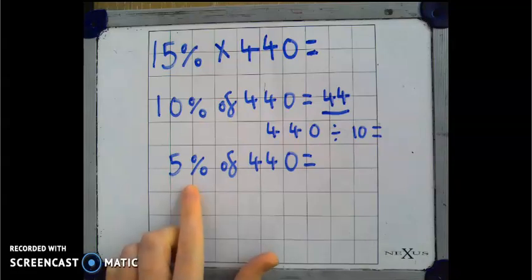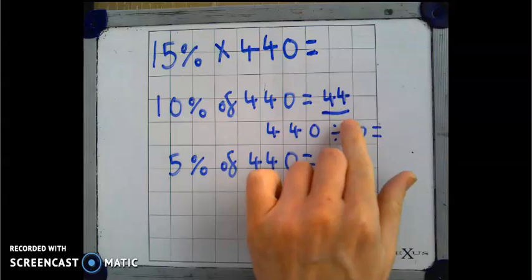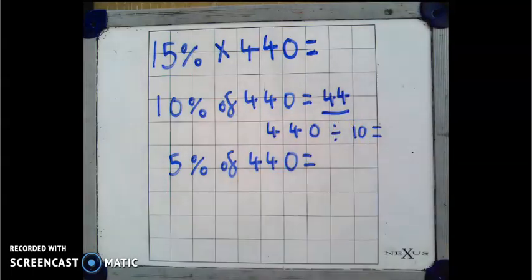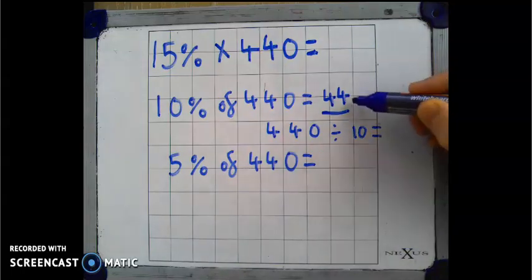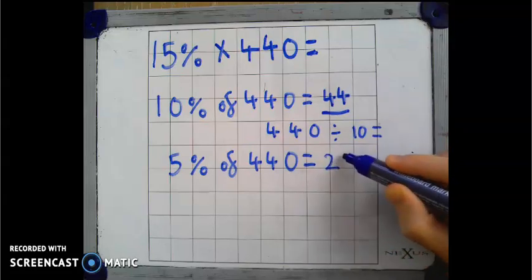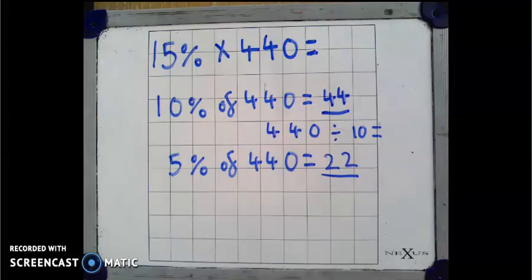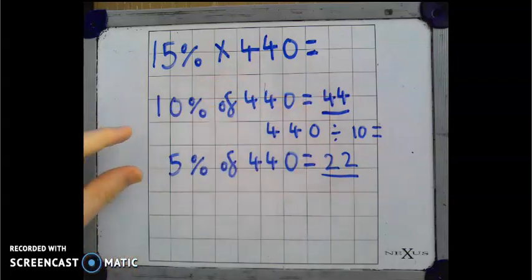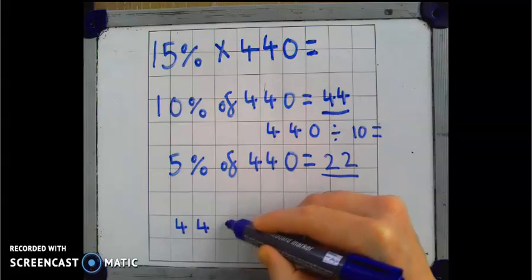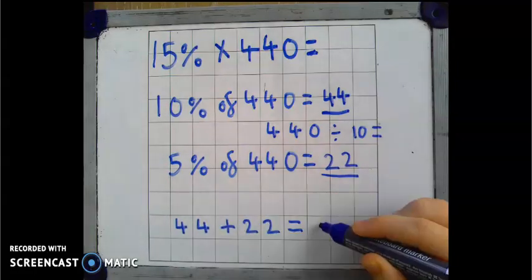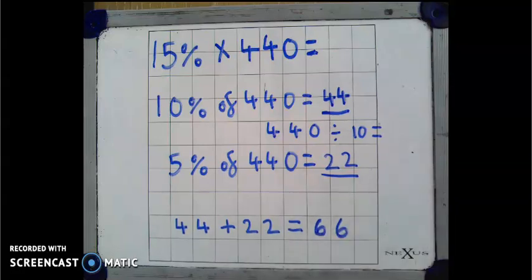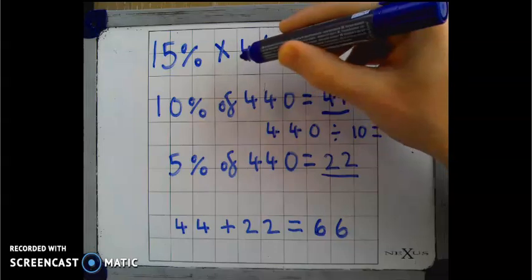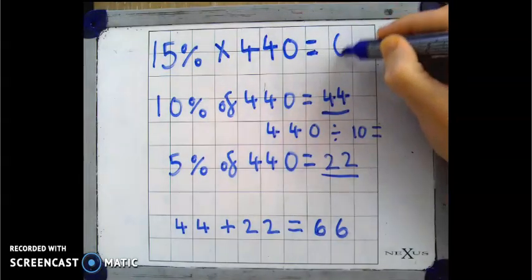To find 5% of 440, we can take this answer and divide it by 2. 44 divided by 2. Well, half 4 is 2, half 4 is 2. So 5% of 440 must be 22. Let's add those two percentages together to find 15%. 44 plus 22 is 66. That means that 15% multiplied by 440 is 66.